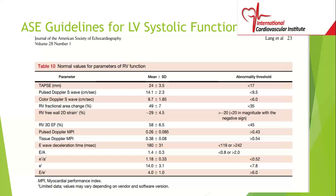We're looking at how much displacement the tricuspid annular plane — the base of the RV — achieves during systole. It should be greater than 17 millimeters. Then we have the pulsed Doppler S wave, done similarly: the cursor is across the lateral tricuspid annulus, but this time you press Doppler, not M-mode. It's a tissue Doppler measurement, and it's abnormal if it's less than 9.5 cm/s — it should be 9.5 or greater.